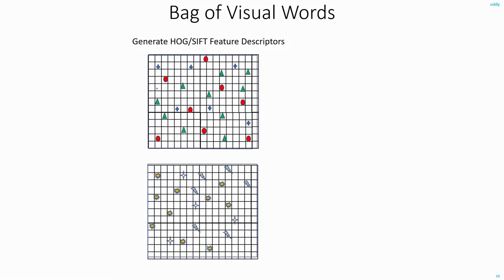In the previous video, we discussed how we can take the histogram of images using the pixel intensity values. On the same lines, we can also take the histogram of images using the features. And how do you extract the features? You can use either HOG or SIFT to extract the features.